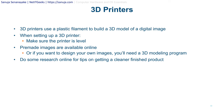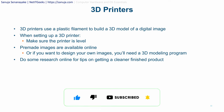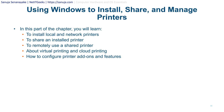3D printers use a plastic filament to build a 3D model of a digital image. When setting up a 3D printer, make sure the printer is level and follow the manufacturer's guidelines. Pre-made images are available online and can be downloaded for use, or you can design your own using a 3D modeling or CAD program. Always follow the manufacturer's guidelines, as there are many different versions of 3D printers, so refer to manufacturer documentation when servicing a specific model.